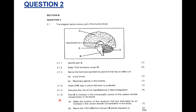Question 2.1.6: Part B is involved in the homeostatic control of carbon dioxide concentration in the blood. State the location of the receptors stimulated by an increase in carbon dioxide concentration in the blood for one mark. And name the two effectors that part B sends impulses to for three marks. This is an overview of Question 2.